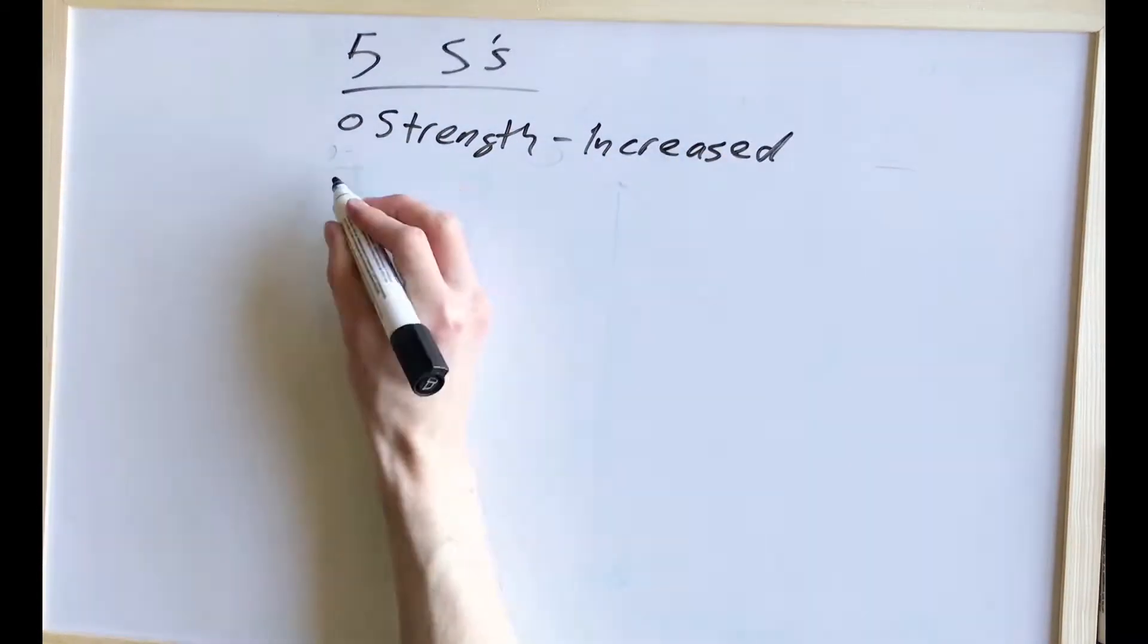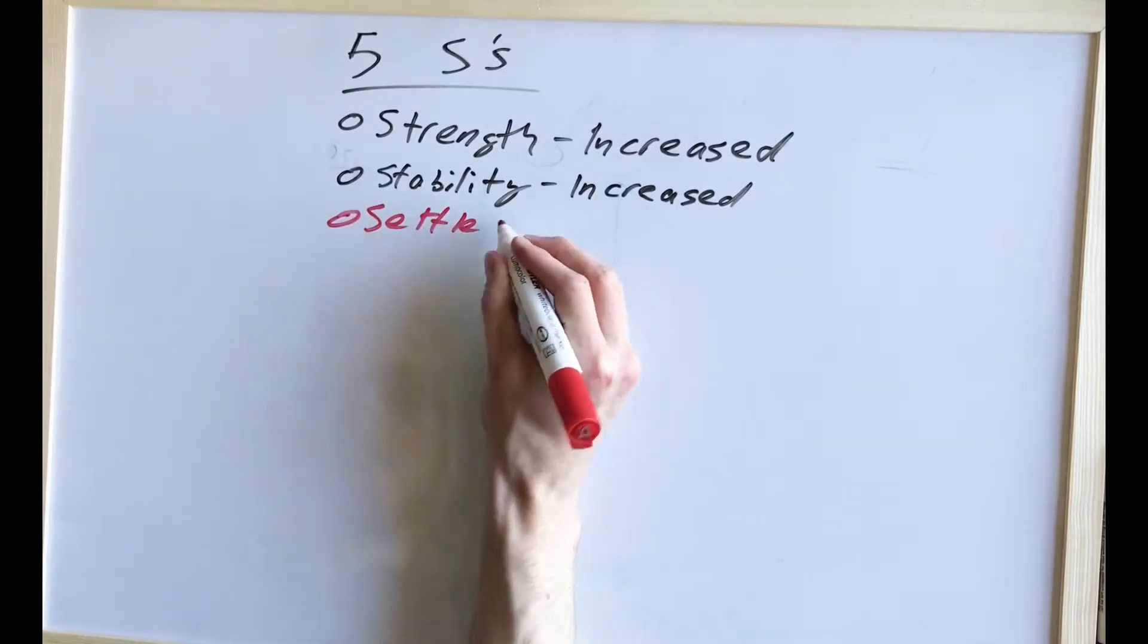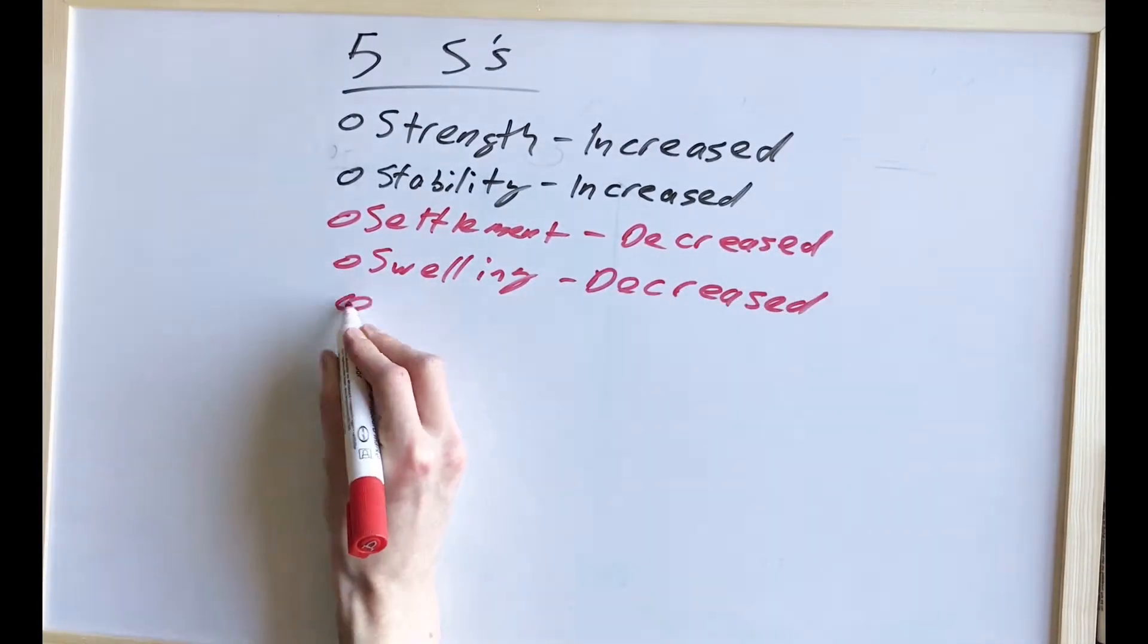There are five S's when it comes to compaction: strength, stability, settlement, swelling and seepage.